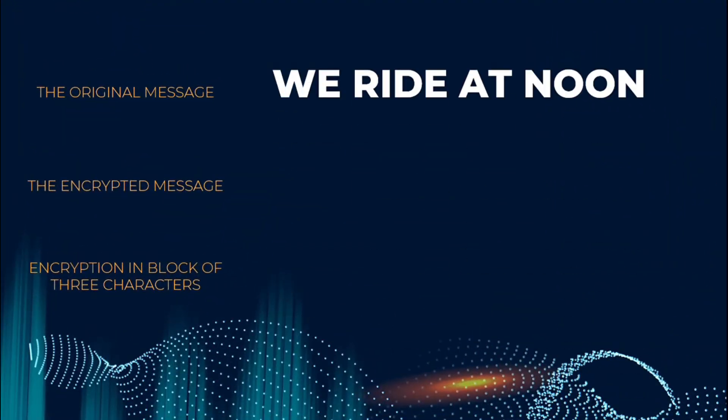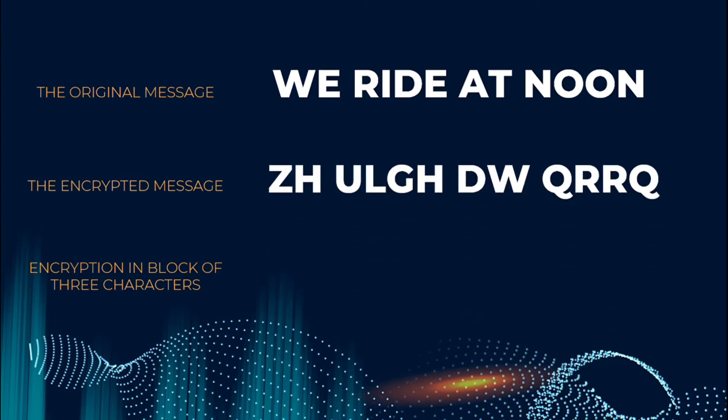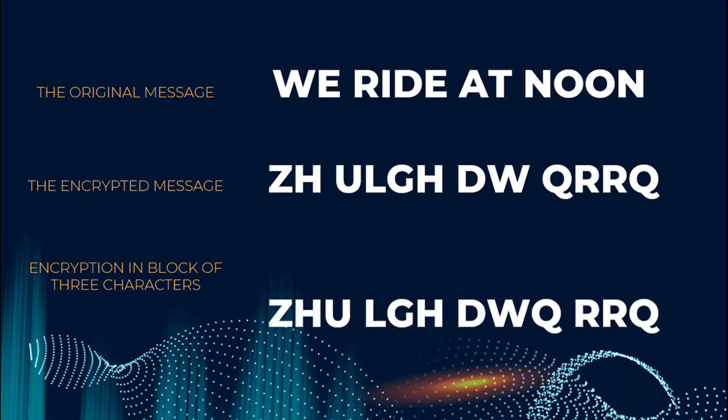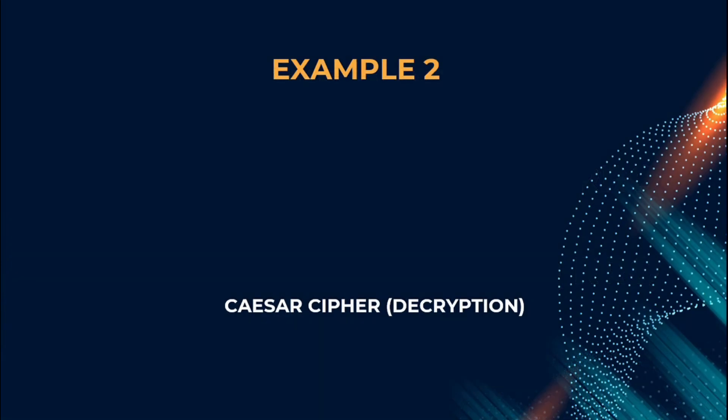The process continues until all plaintext are encrypted to ciphertext. As we completed the encryption process, we obtained a message which is Z H U L G H D W Q R R Q. But in encryption, it is usually represented in block of 3 characters as follows.